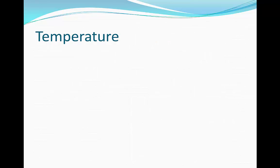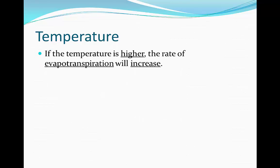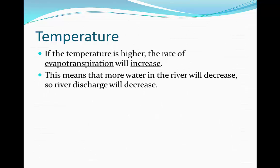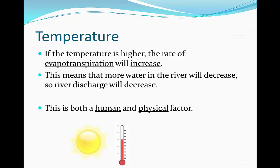Temperature is another factor which is going to affect river discharge. If the temperature is much higher, the rate of evapotranspiration will increase, meaning the amount of water in the river will begin to decrease. When rain then arrives, the discharge may decrease because more water is being evaporated than is falling into the river channel. Notice how this is both a human and physical factor — temperature is influenced by the sun, which is physical, but it can also be influenced by human behavior such as the greenhouse effect and global warming caused by greenhouse gas emissions.